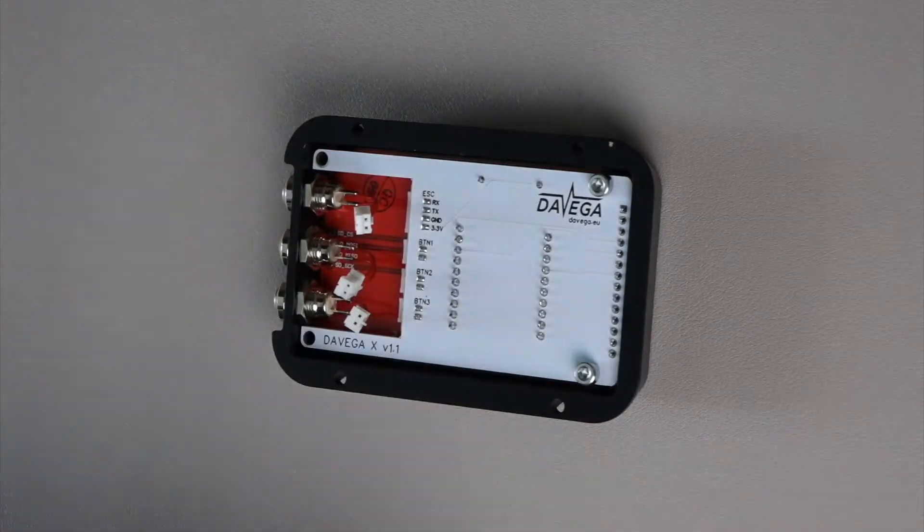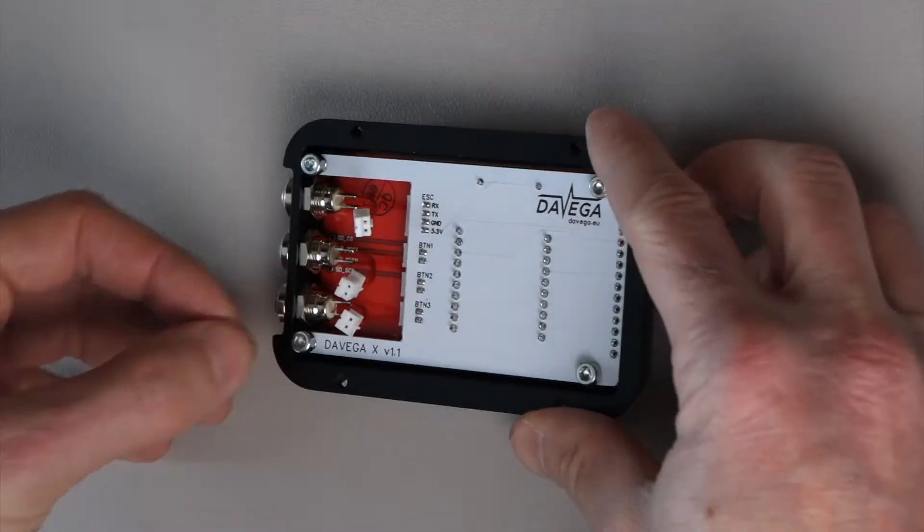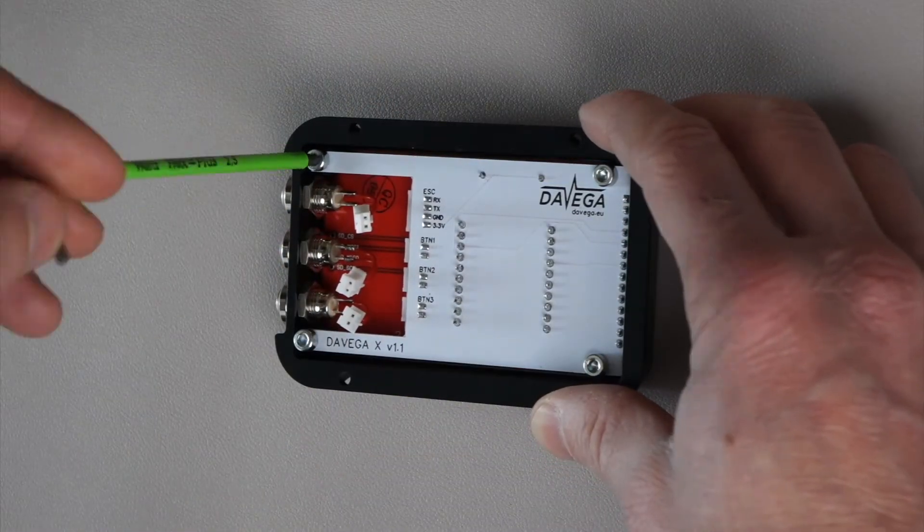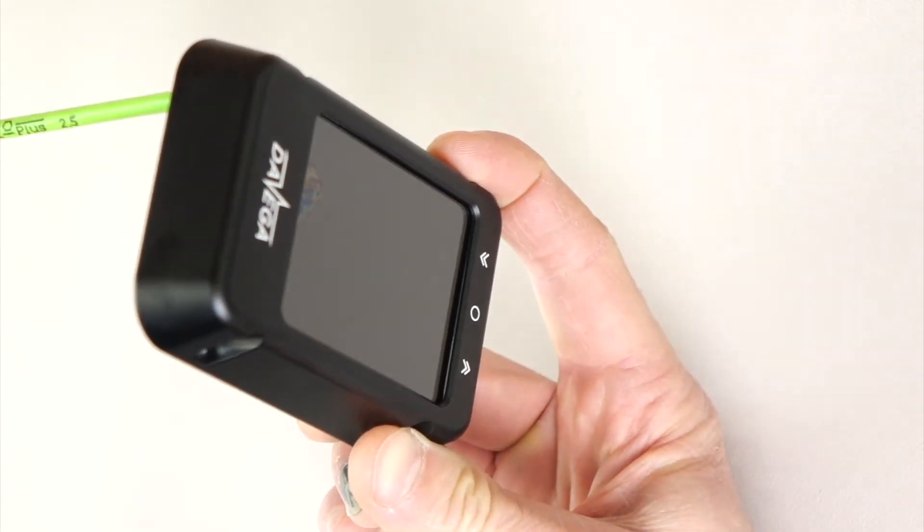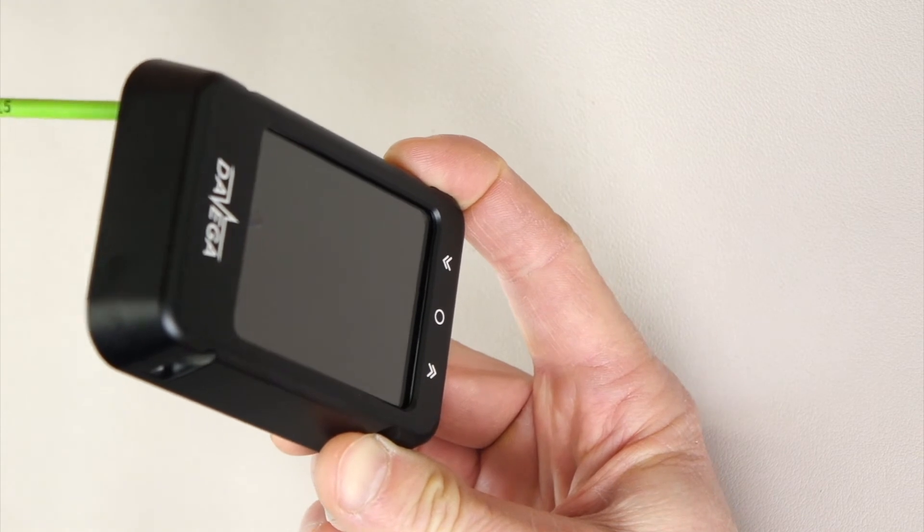Finally, secure the electronics with spacers and bolts. Do not over tighten the bolts, otherwise you may damage the display. If you see any distortions on the display, loosen the bolts until the distortions disappear.